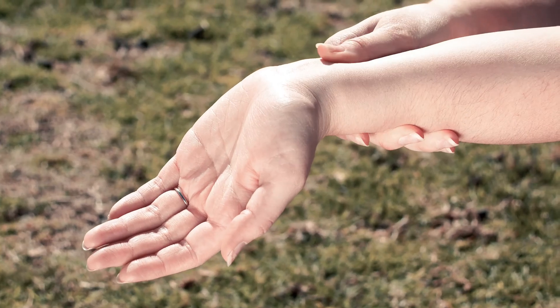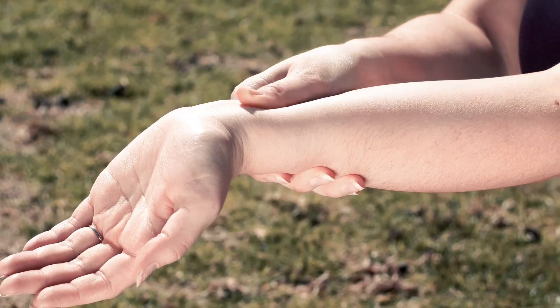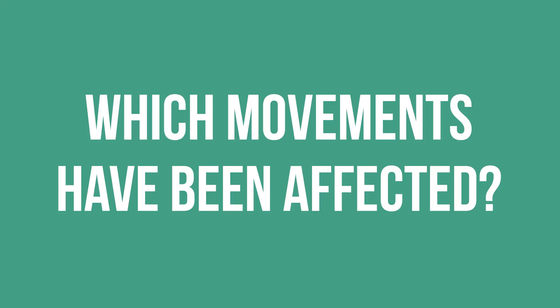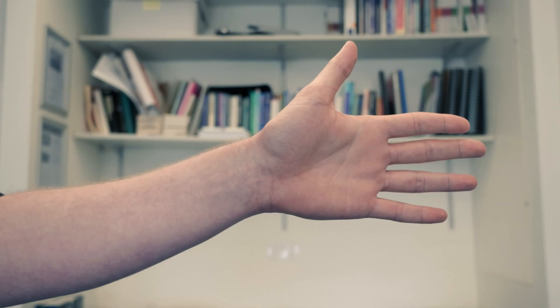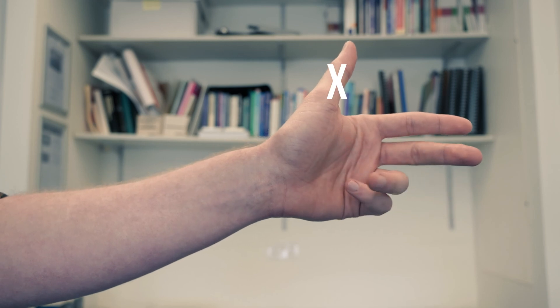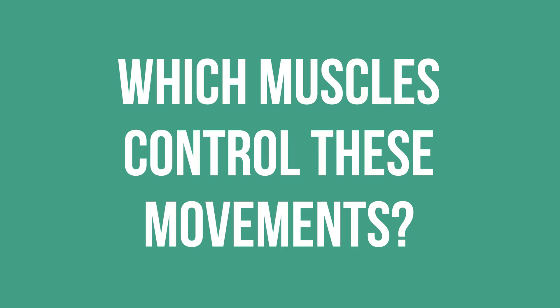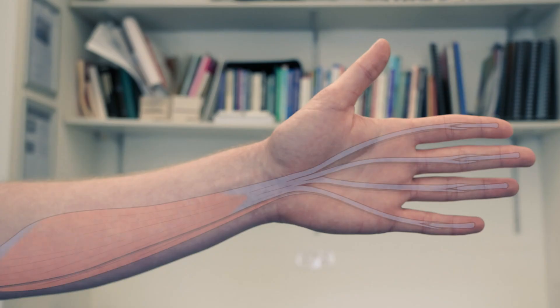The problem occurs due to nerve damage, but which nerve has been injured? To work this out you'll need to ask yourself three questions. First: which movements have been affected? In this case the patient is unable to flex their thumb or their lateral fingers. Next: which muscles control these movements?